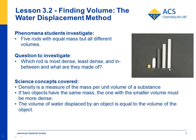Given that these all have the same mass, which one do you think is the most dense? Which is the least dense, and which is in between? You want kids to understand that if they have the same mass, the one with the greater volume is going to have the lowest density, and the one with the smallest volume is going to have the greatest density, with the one in between having an in-between density.